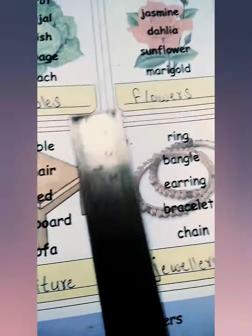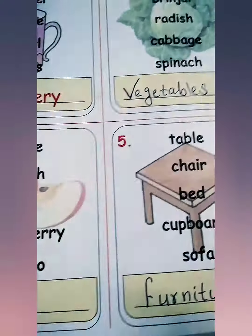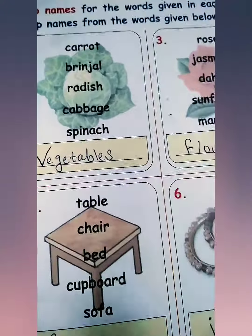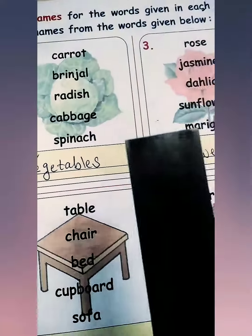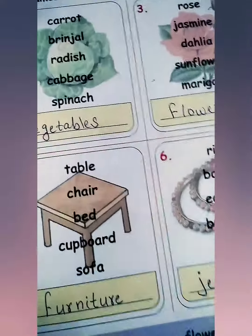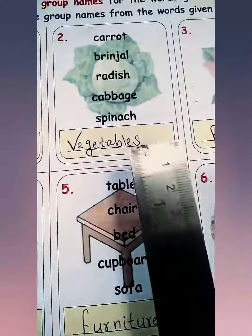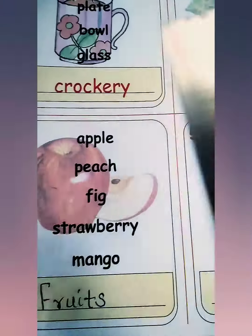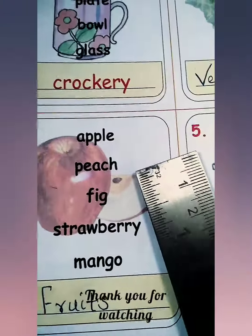For example, अगर आपको हम कहते हैं — banana, तो banana को आप कहाँ पे include करोगे? कौन से group में आप उसे choose करोगे, कौन से group में डालोगे? Vegetables में? No — हम उसे fruits के group में। Yes!